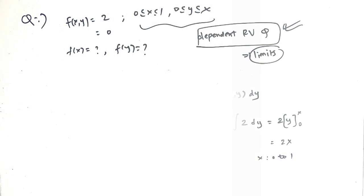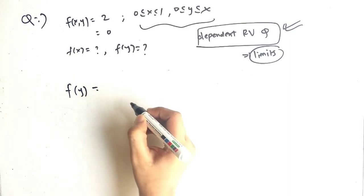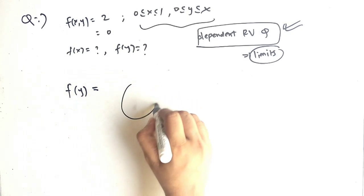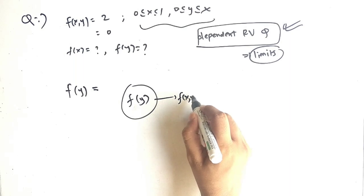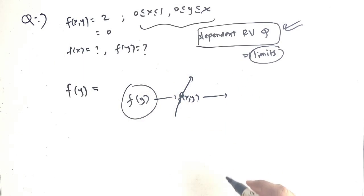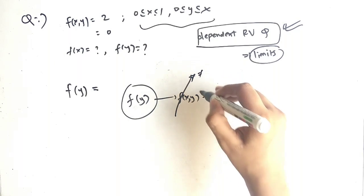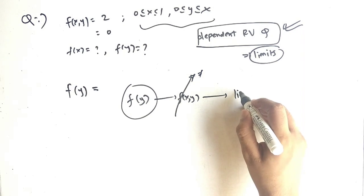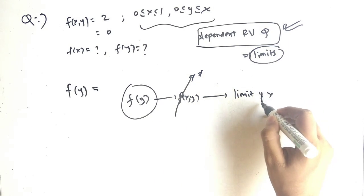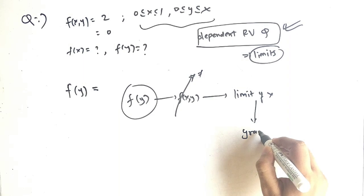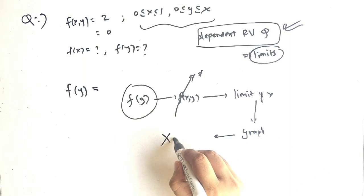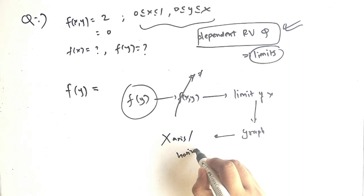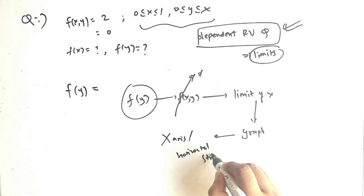Now we have to find small f of y. The procedure remains the same: we use f of x comma y, and if we can eliminate x, we get f of y. To eliminate x, we need the limits of x. For that, we plot a graph and from the graph we choose the horizontal strip — the x strip.